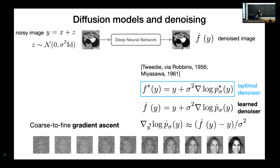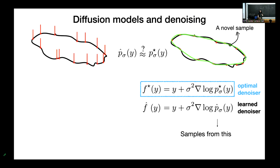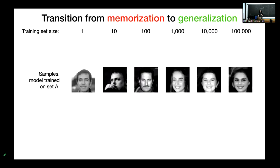We do not have direct access to the density — we only see individual samples from it. So how can we assess from these individual samples what type of density the denoiser learned? Is it a discrete collection of delta functions or a continuous model of the underlying distribution? Back to the original question.